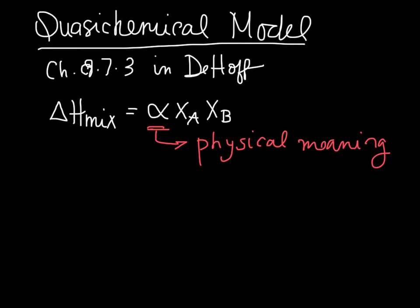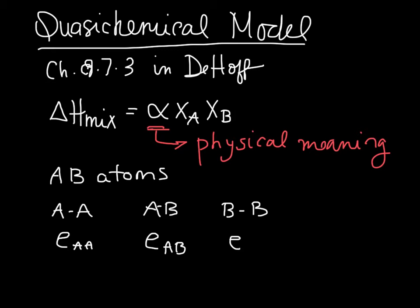To arrive at the meaning or mathematical expression for alpha, we consider a binary solution of A and B atoms, and we say that there could be AA bonds in this solution, AB bonds, or BB bonds. Each of these bonds has its own unique energy associated with it.